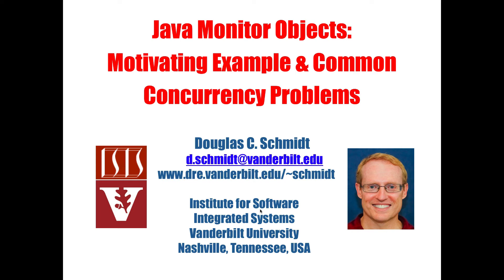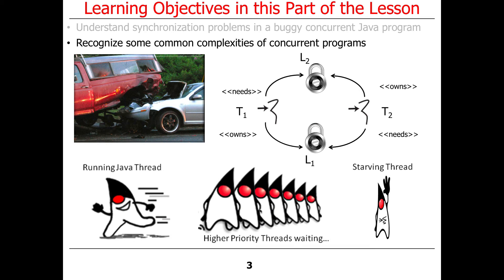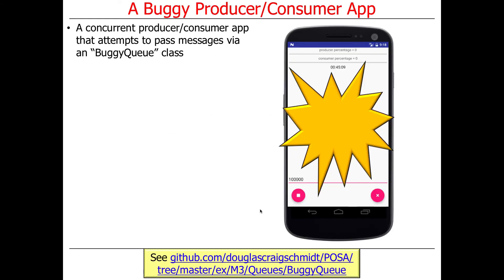Now that you know a little about what a monitor object is, let's motivate why you might need one, and we'll also use this as an excuse to talk about a few other concurrency problems. We'll look at a particular example called BuggyQueue, which is buggy as the name implies. If you call the methods on BuggyQueue — offer and pull — in multiple threads, it'll end up corrupting the internal state because they're not properly protected. If the consumer and producer are called at the same time, bad things will happen.